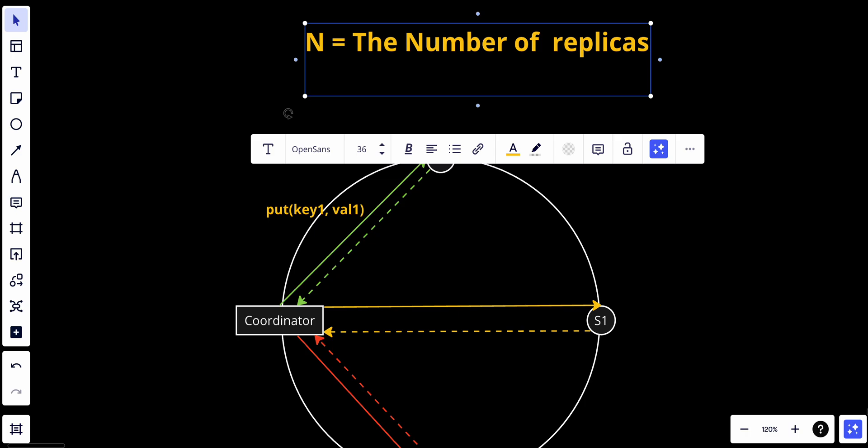We have W which will be the write Quorum. The write Quorum of size W, like for write operations to be considered as successful, write operations might acknowledge from W. So basically if W equals three, in order to make the write operations right or pass, that means the W should equal to three. And we have R, and R basically is the read Quorum and it's the same as the write.